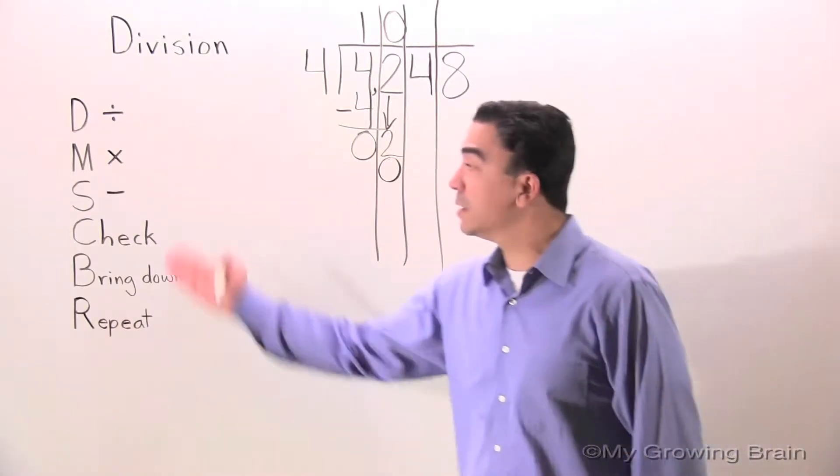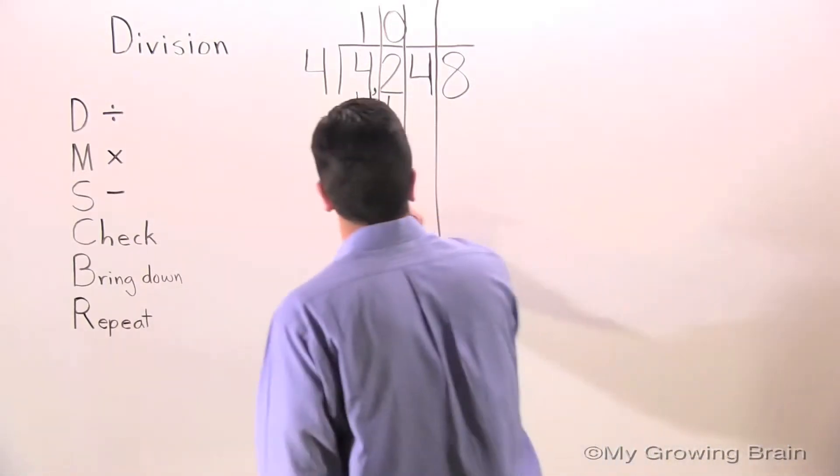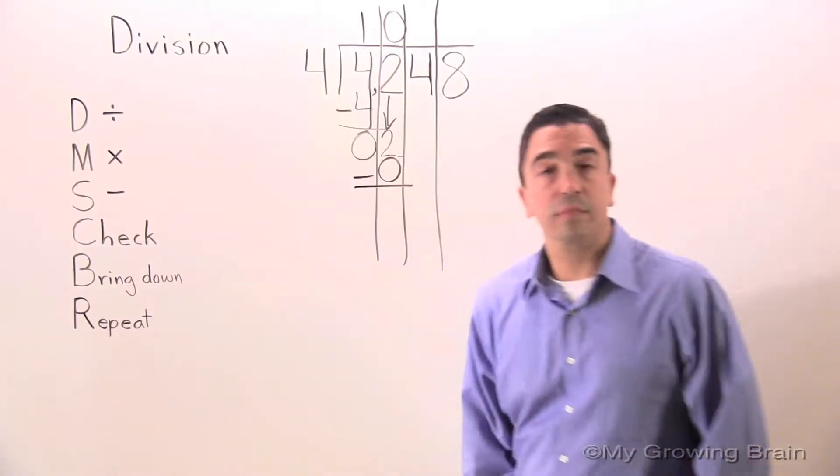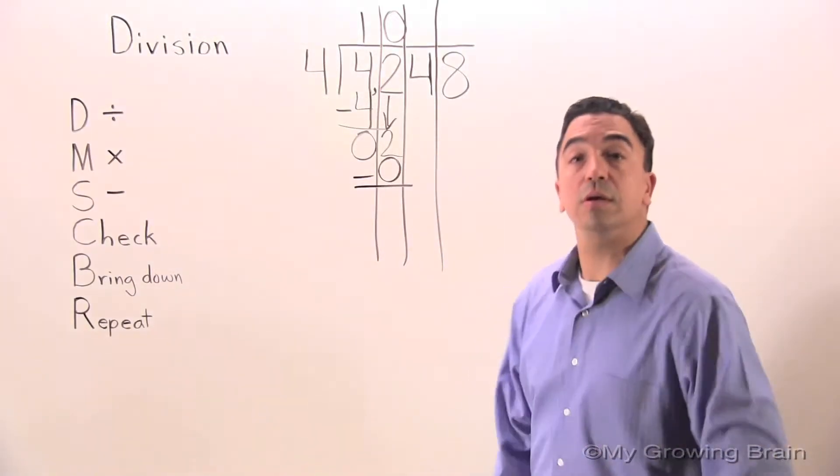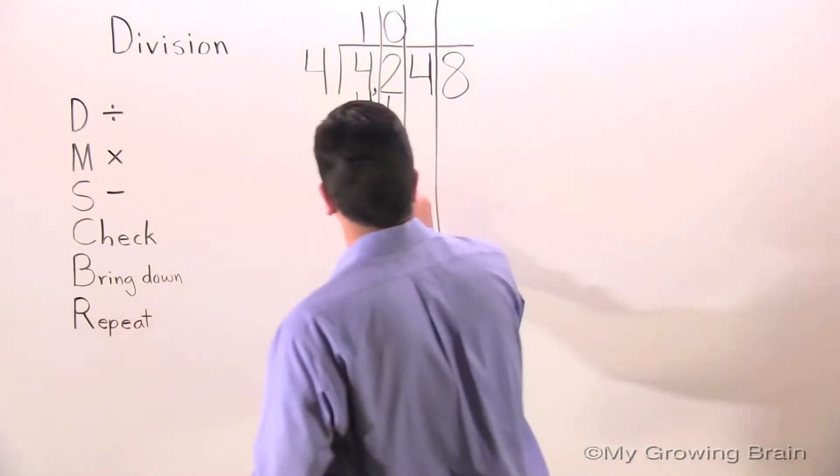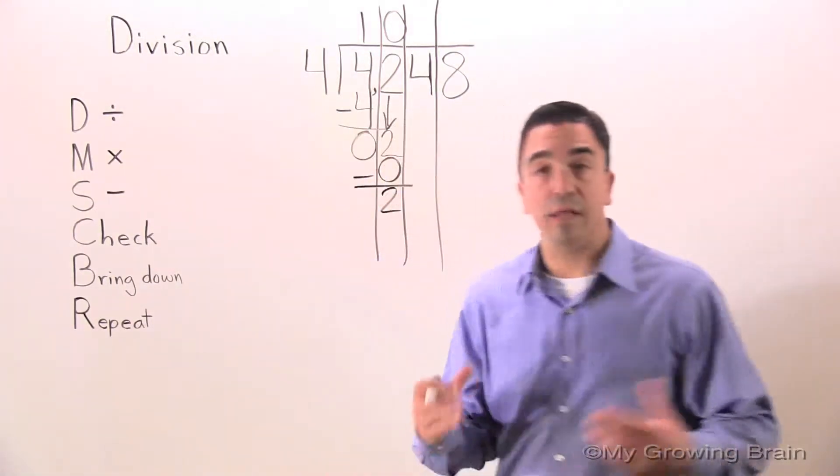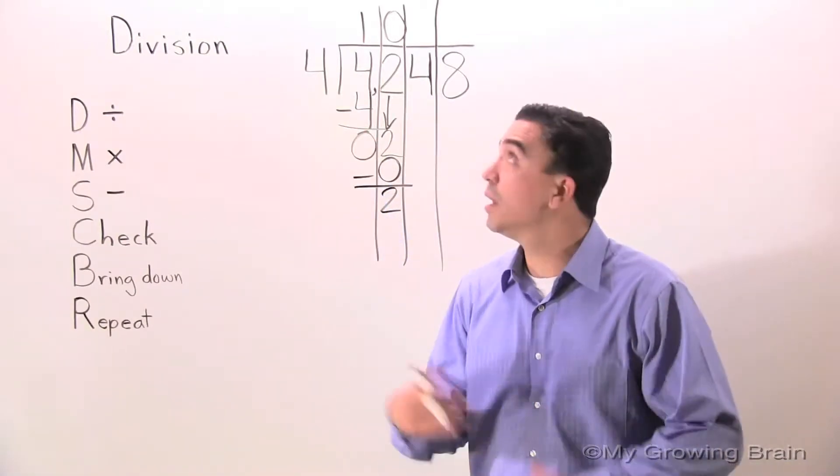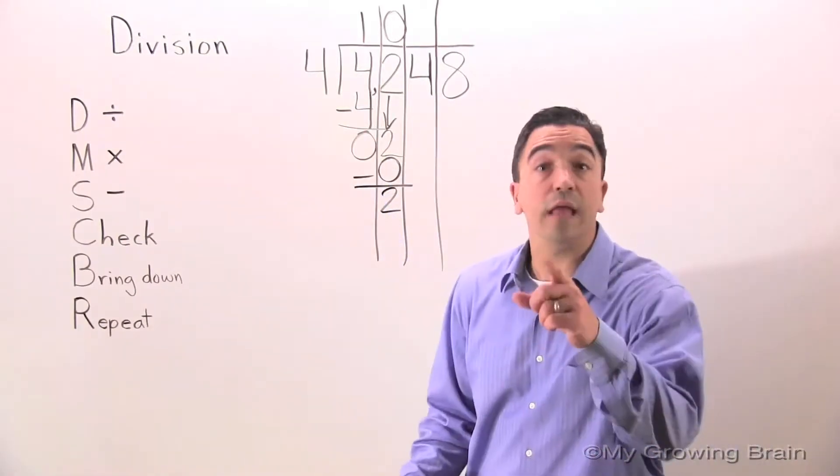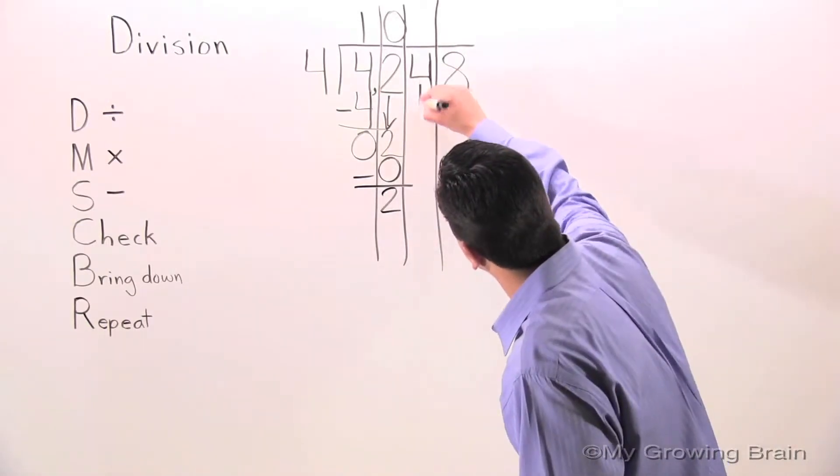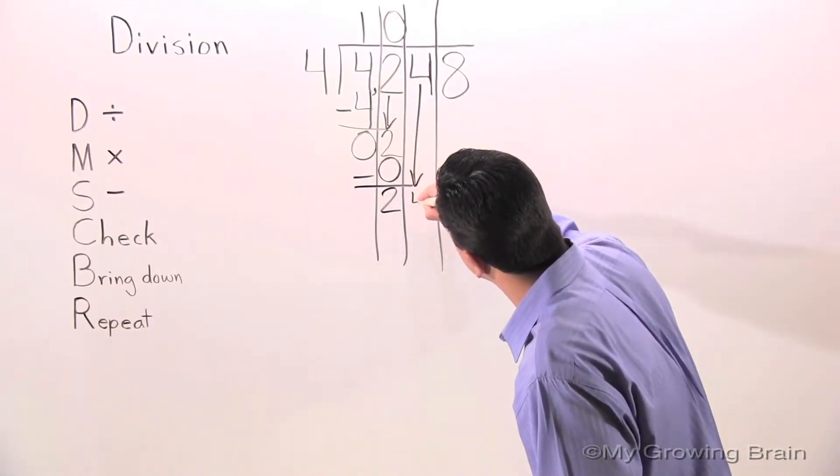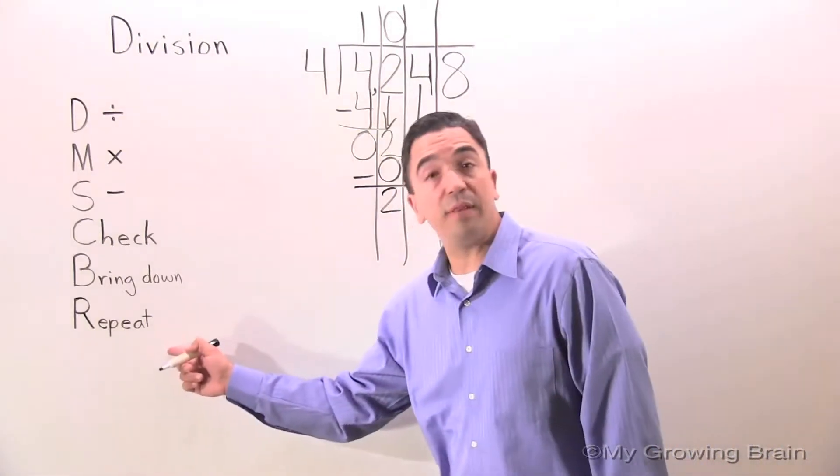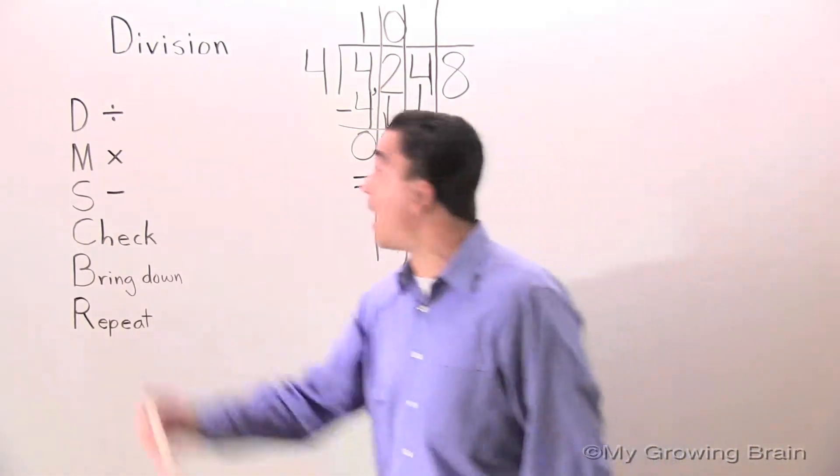Next step: subtract. 2 minus 0 is 2. Next step: check. 2 is less than 4, keep on going. Next step: bring down. Next step: repeat the process, back to the top.